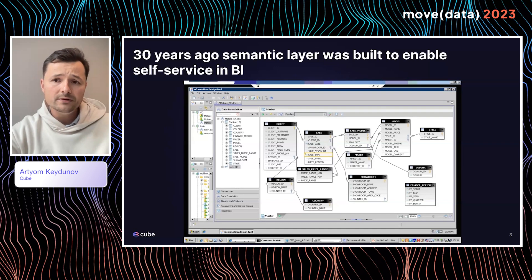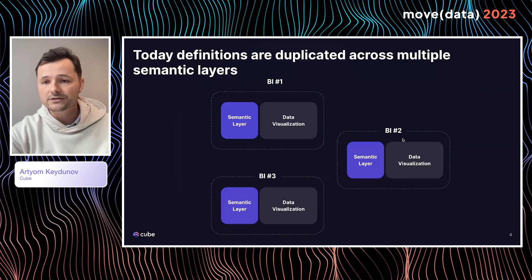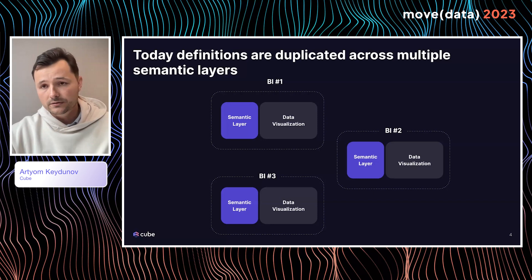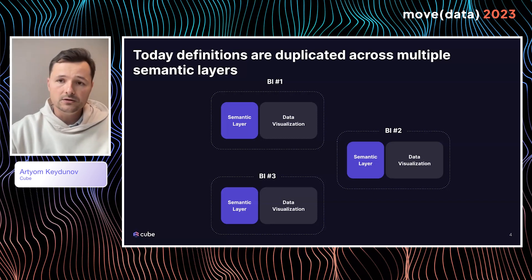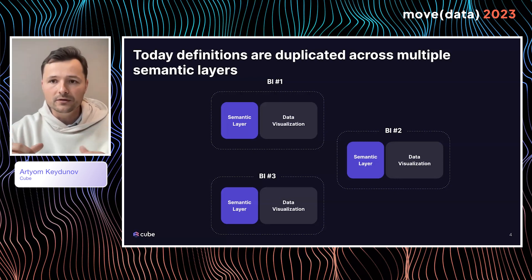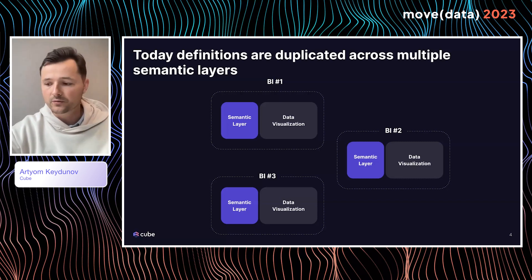What happened after that first generation of Business Objects and MicroStrategy is that the monolith applications sort of exploded. We entered the cloud age, and instead of old on-premises technologies, we started to have a lot of lightweight cloud-based solutions. The idea was to democratize data, because with monolith applications only a few people knew how to operate them, but we wanted to give data access to more people. That led to the whale being broken up, and now we have a lot of different tools — different visualization tools, different ETLs, different warehouses.